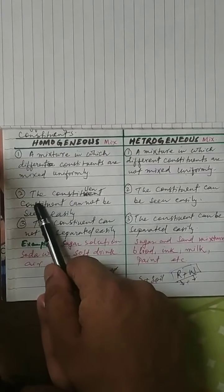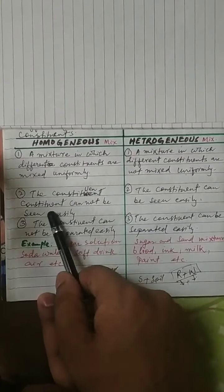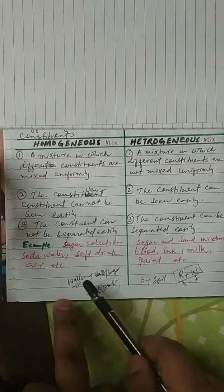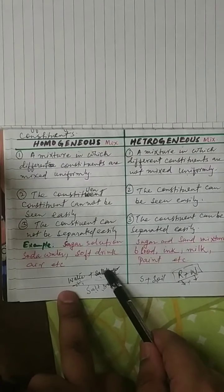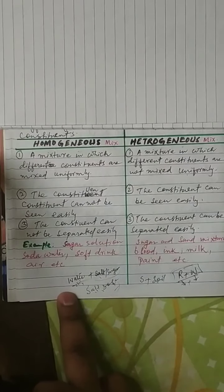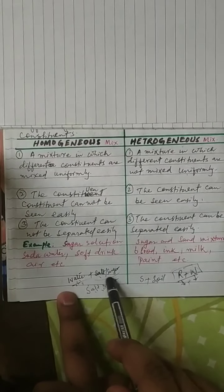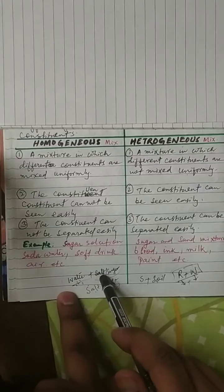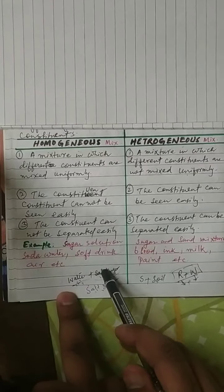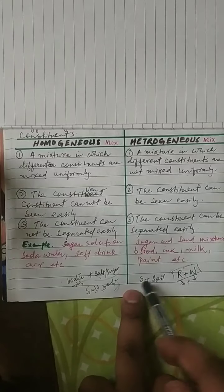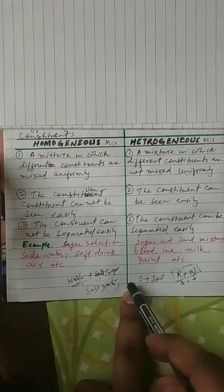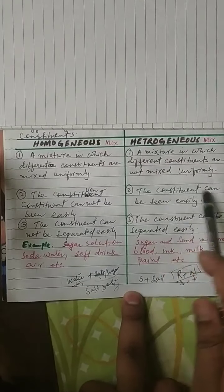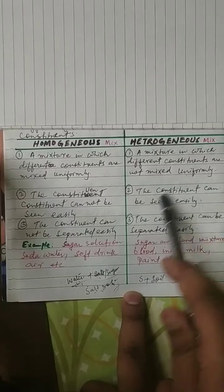Now, in a homogeneous mixture the constituents cannot be seen easily. For example, in a salt solution, when you mix salt in water, the salt dissolves and you cannot see it. But in a heterogeneous mixture like rice and wheat, or salt and sand, you can see the constituents easily.